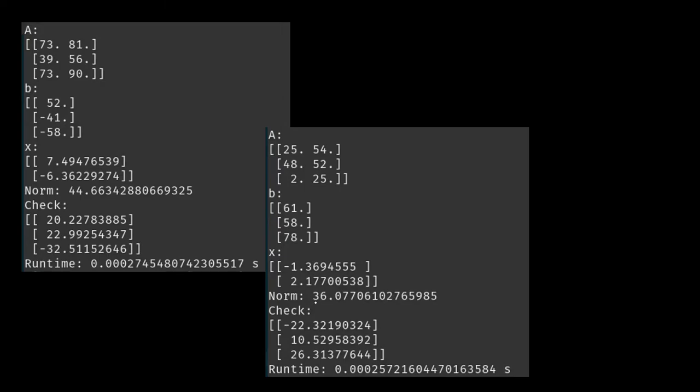On a second run-through, now we have a norm of 36, and again, you can see that that's not particularly terrible, but we're still 26 units off the third dimension, 10 units off the second dimension, and negative 22 units off the first dimension.